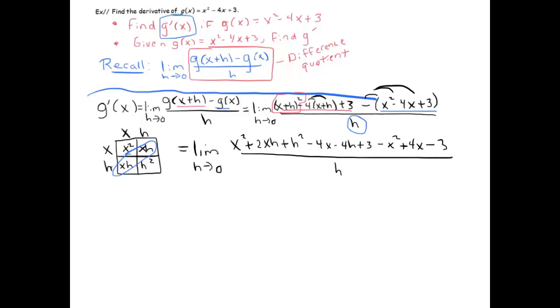That h is going to go away, I promise. Let's take a look at a few things that happen. x² here cancels with that -x². That's no accident. That -4x cancels with that +4x. That's also no accident. That +3 cancels with that -3, and that's no accident.